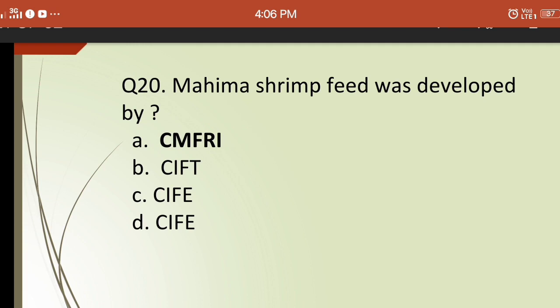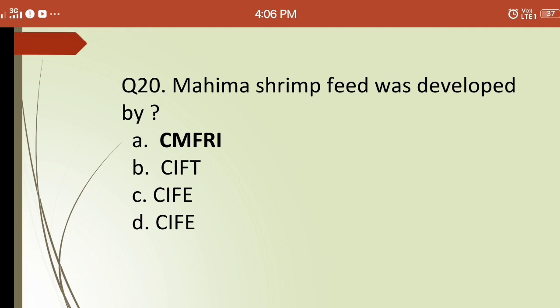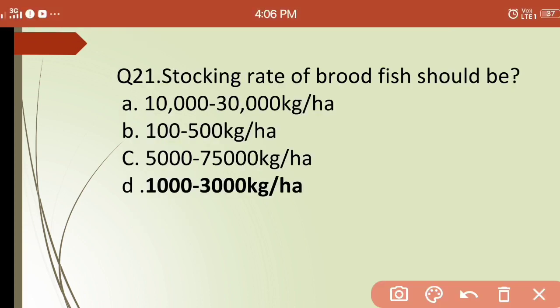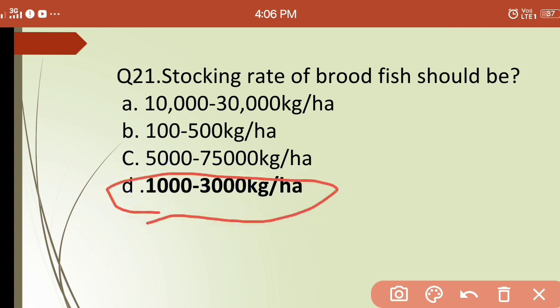Twenty-first question: the stocking rate of brood fish should be? Options are: (a) 10,000–30,000 kg/ha, (b) 100–500 kg/ha, (c) 5,000–75,000 kg/ha, (d) 1,000–3,000 kg/ha. The correct answer is (d) — the stocking rate of brood fish should be 1,000 to 3,000 kg per hectare.